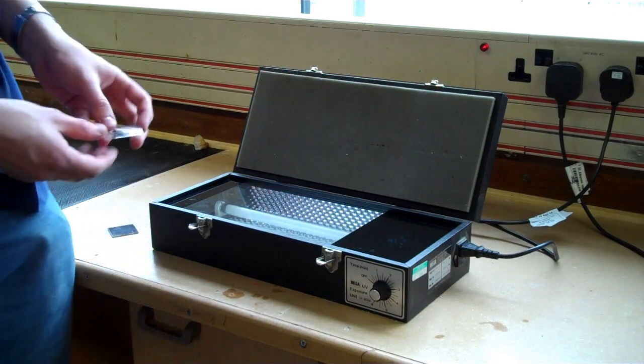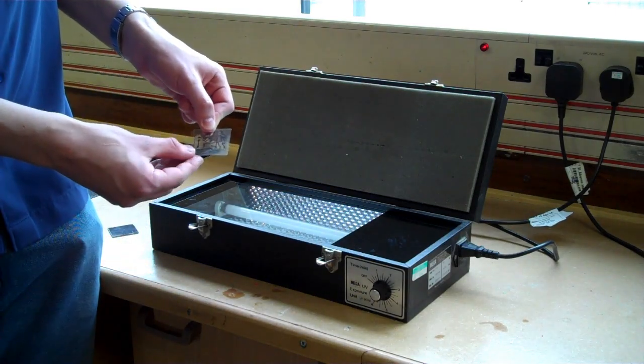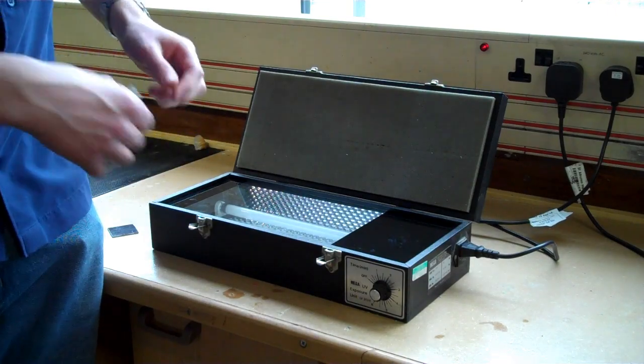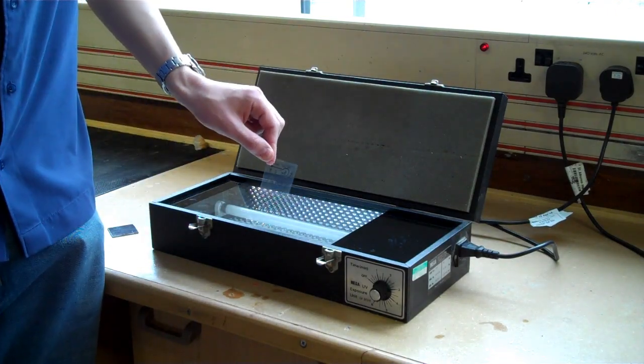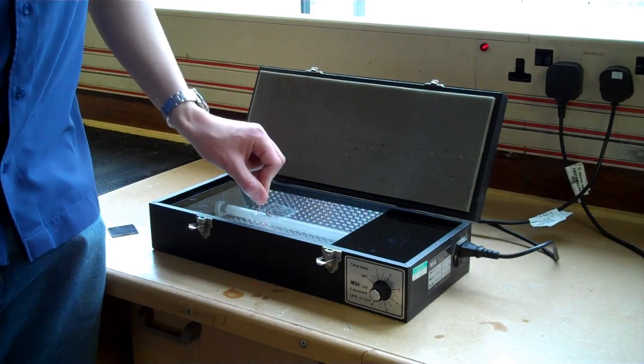So first off I place the acetate onto the UV light box ensuring that I can't read the writing which I put on the acetate.